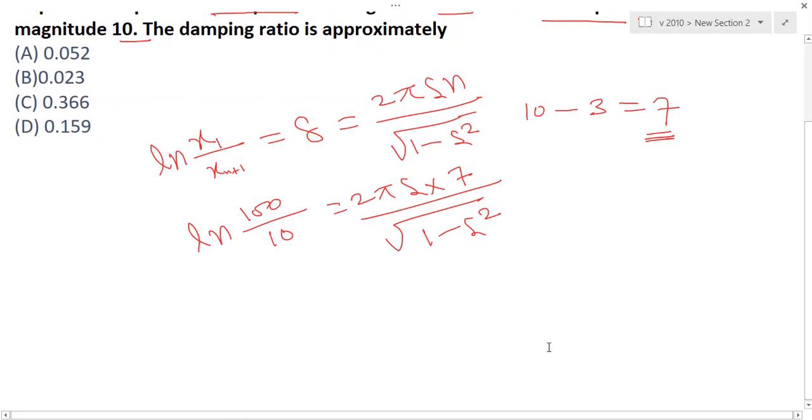So how to calculate zeta for this? Just take 100 by 10, that is equal to 10, is equal to e to the power 2 pi zeta 7 divided by square root of 1 minus zeta square. Otherwise, no need to take that e value exponential, so just ln 100 by 10, that is ln 10 value you will get.